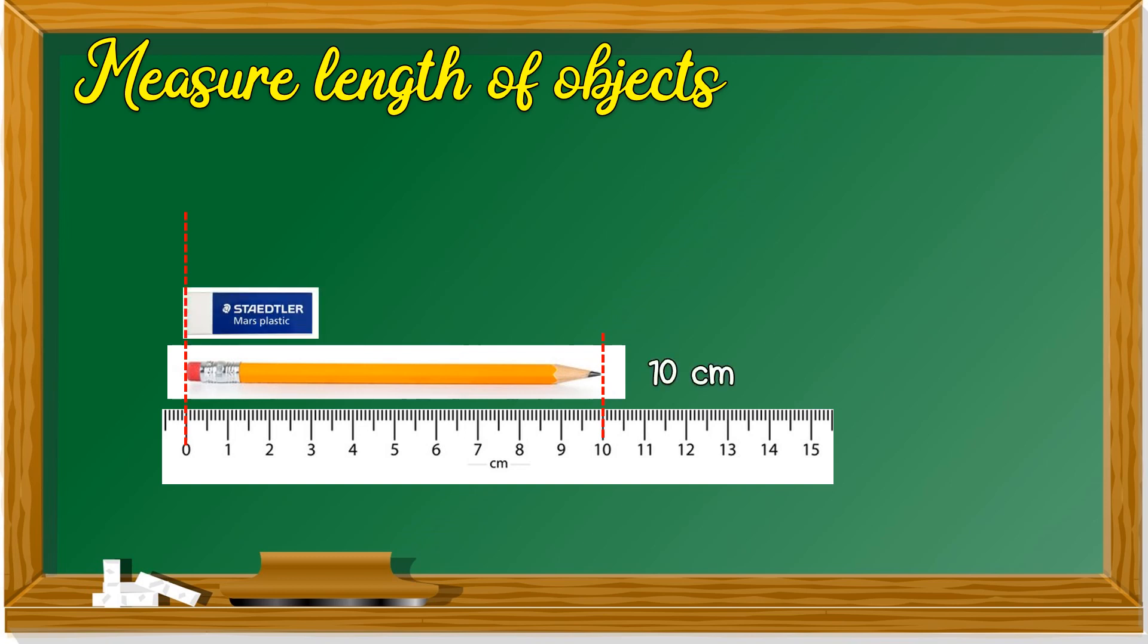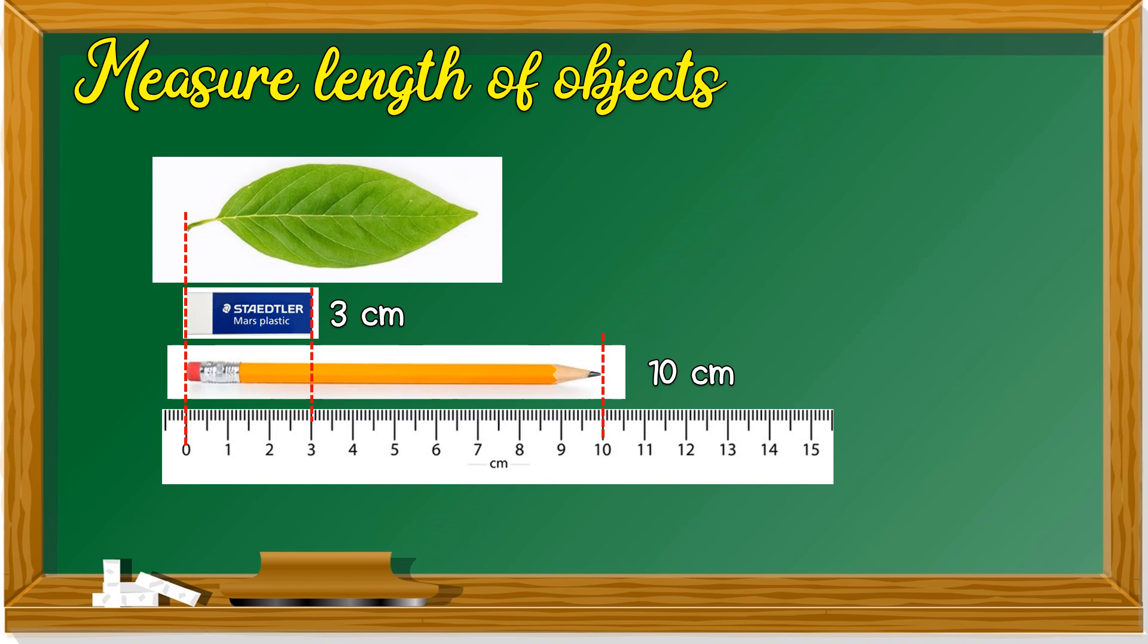How about this one? An eraser. Remember, put at zero, starting from zero. This one is three, three centimeter. How about this leaf? The tip is at zero. We count until here is seven centimeter.